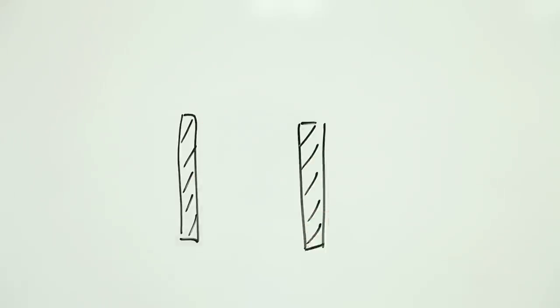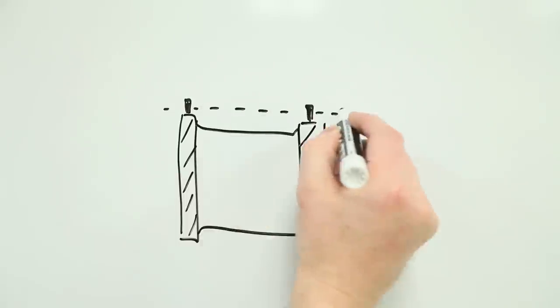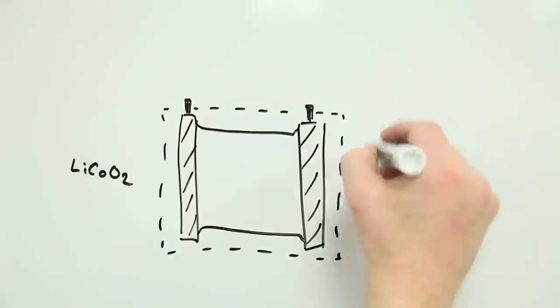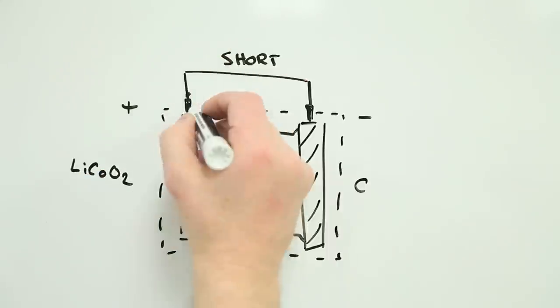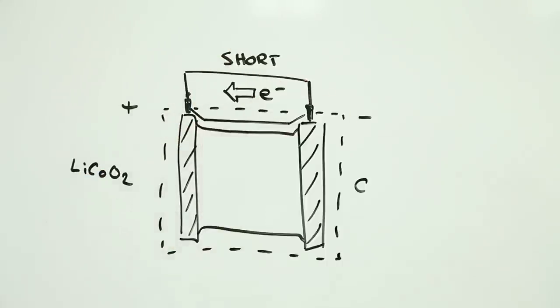Short circuits in lithium-ion batteries, whether inside or outside, are bad news. They cause the battery to heat up fast as it discharges. And the hotter it gets, the faster it heats up.